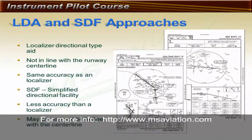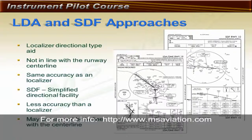In addition to the ILS, there are two other guidance systems that resemble an ILS but are slightly different: the localizer type directional aid, or LDA, and the simplified direction facility, or SDF. Both systems are usually installed as non-precision approaches because they do not usually provide glide slope indications. An LDA is a localizer not aligned within 30 degrees of a runway centerline but has the same accuracy as an ILS localizer. The SDF approach does not have the same accuracy as a localizer, and the SDF may or may not be aligned with the runway centerline.